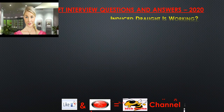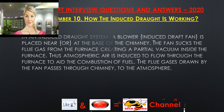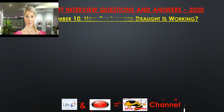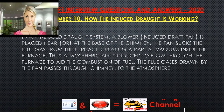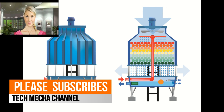Question 10: How does the induced draft system work? In an induced draft system, a blower or induced draft fan is placed near or at the base of the chimney. The fan sucks the flue gas from the furnace, creating a partial vacuum inside the furnace. Thus atmospheric air is induced to flow through the furnace to aid combustion, and the flue gas drawn by the fan passes through the chimney to the atmosphere.